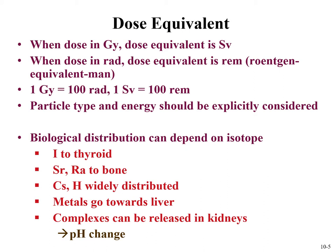The biological distribution of an isotope can also be an important consideration when evaluating internal dosimetry. Iodine collects in the thyroid. Calcium in the bone means divalent metal ions such as strontium and radium go to the bone. Metal-ligand complexes passing through the kidney encounter a pH decrease, so metal ions can be released. These will have different effects on different parts of the body. The NCRP has models about different radionuclides and how they behave in the body, and this is a reason that radionuclides differ in their annual limits on intake.